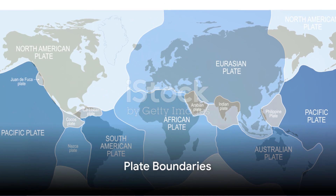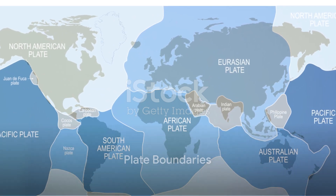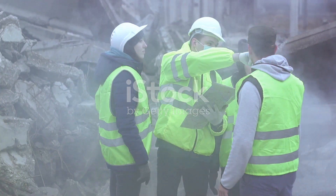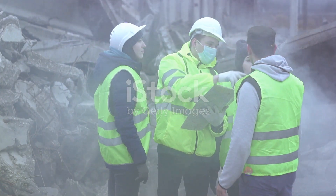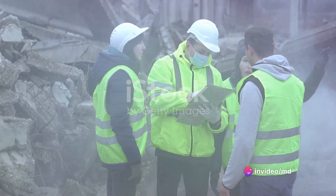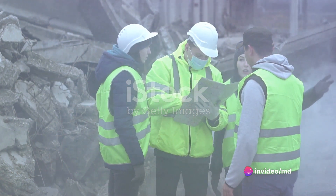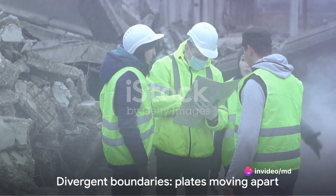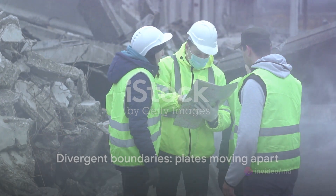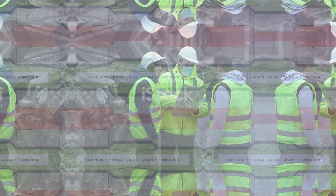These tectonic plates interact with each other at their boundaries. Picture a crowd of people — some moving away, some moving towards each other, and some sliding past each other. This is exactly what happens at divergent, convergent, and transform boundaries respectively.